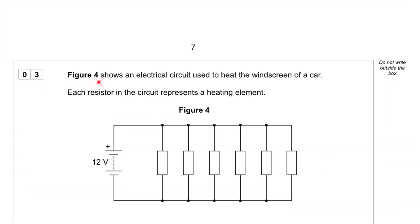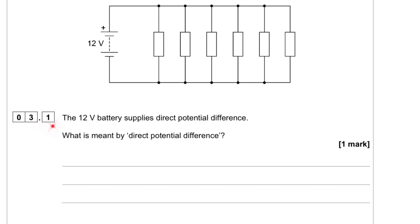Question 3. Figure 4 shows an electrical circuit used to heat the windscreen of a car. Each resistor in the circuit represents a heating element.